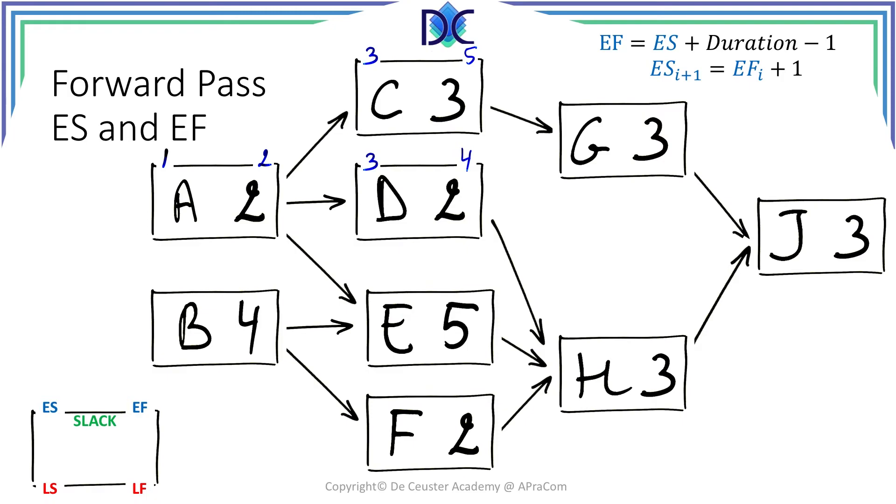Now for activity E it's a little bit different. We know when activity A is finishing but E can only start when A and B are finished. So now we first have to calculate early start and early finish for activity B. So B, again no predecessor, can start on April the first and will finish on April the fourth.